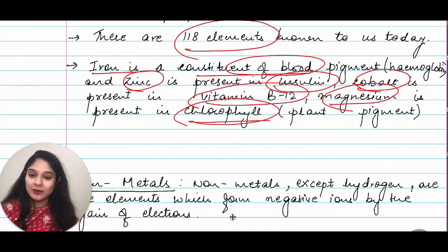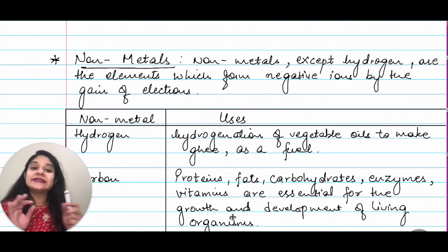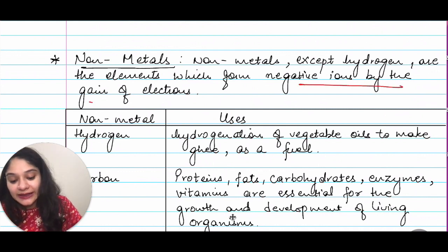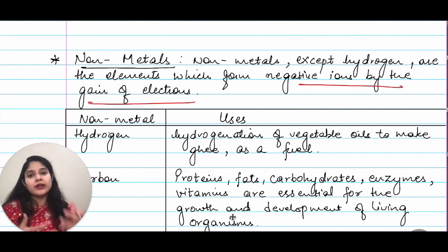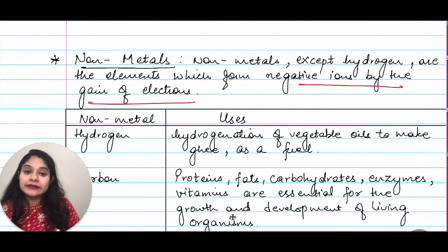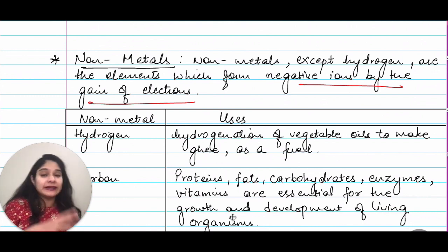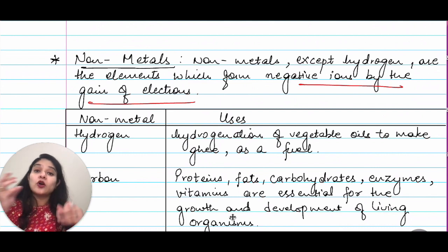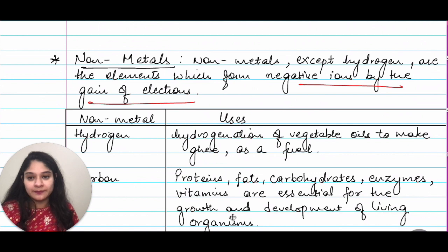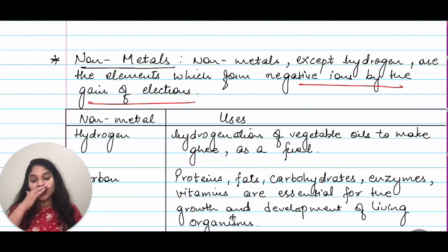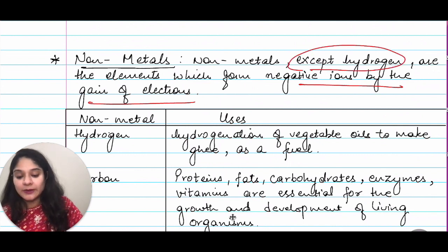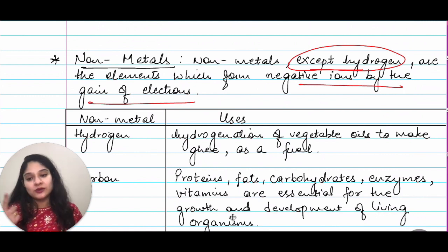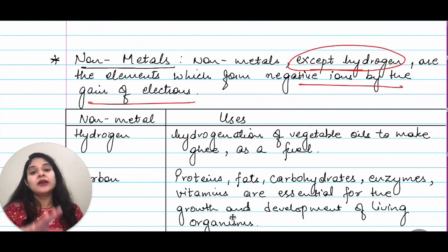Moving on to non-metals. Non-metals, except hydrogen, are elements which form negative ions by the gain of electrons. Metals form a positive ion by the loss of electrons — you can also use that definition. It's up to you which one you go with. We say 'except hydrogen' because hydrogen has just one electron — sometimes it can gain, sometimes it can lose, depending upon the situation. So we always say 'except hydrogen.'